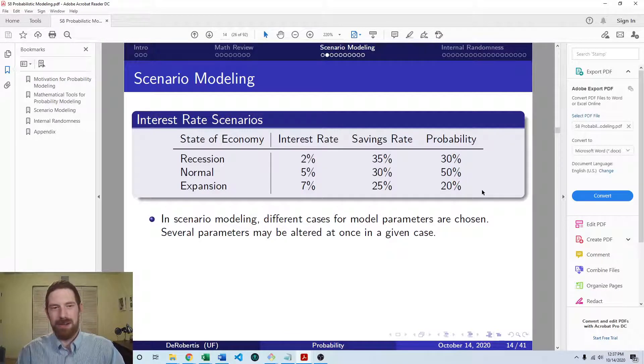Here we're saying 30% recession, 50% normal economy, 20% expansion economy. And what that allows you to do is then take an expected value across the different cases to get an expected outcome from your model that's separate from the baseline result, but maybe more realistic because you've thought about scenarios rather than just the most likely value of each input.